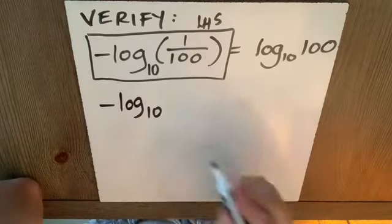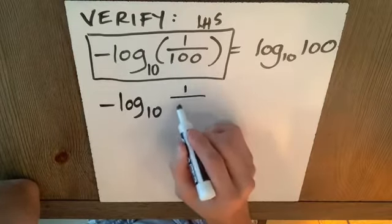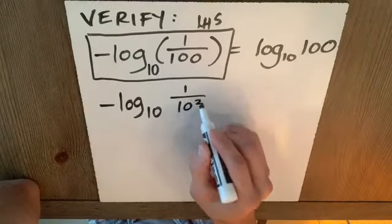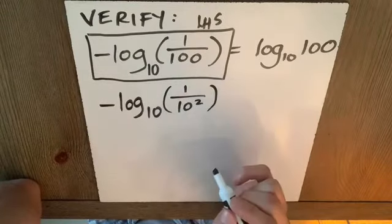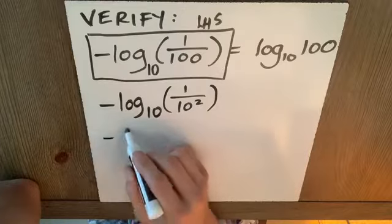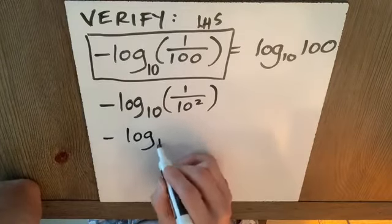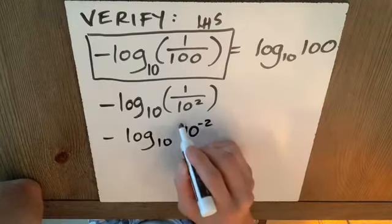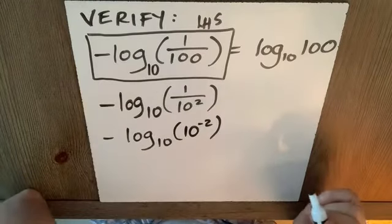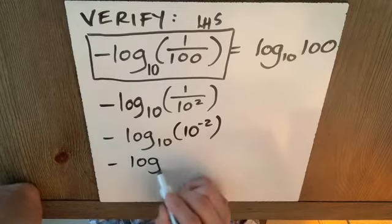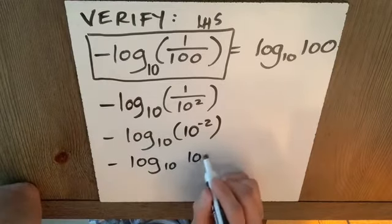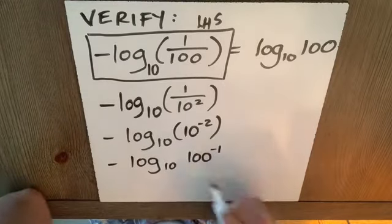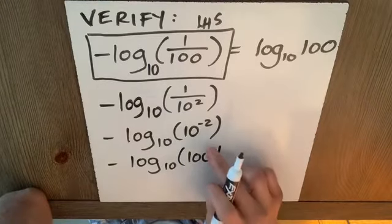Let's see. I know I can write 1 over 100 as this is equal to negative log base 10. Do I really need to write base 10? No. This is going to be 1 over 10 squared, which is, of course, negative log base 10 of 10 to the negative 2. Let's make this 100 to the negative 1. Again, I like that better. I like that better.